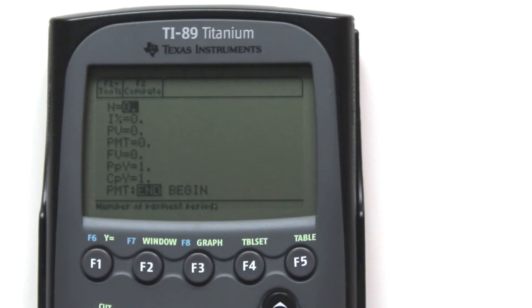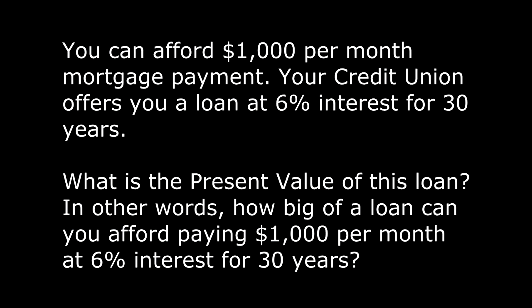Now we are ready to enter new information. Let's take a look at the problem. You can afford $1,000 per month mortgage payment. Your credit union offers you a loan at 6% interest. What is the present value of this loan? In other words, how big of a loan can you afford paying $1,000 per month at 6% interest for 30 years?